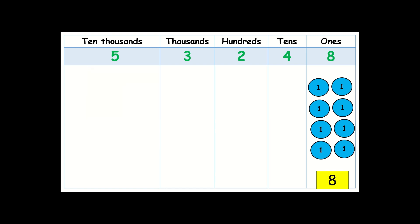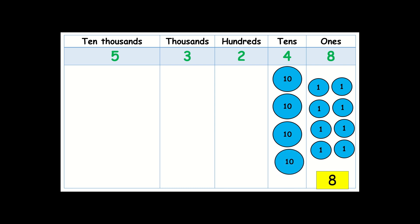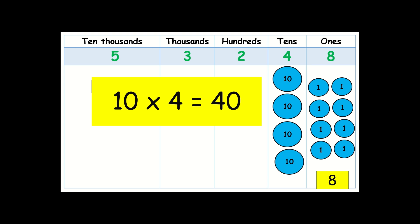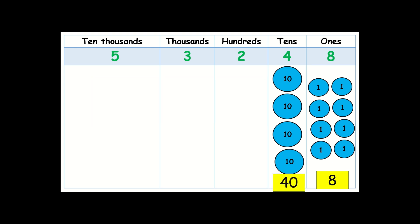Next, tens — how many tens? We have 4 tens. To find the value, we multiply the digit by its place value: 10 times 4 equals 40. So the value of digit 4 is 40. What about the value of digit 2 in the hundreds place? We have 2 hundreds. Multiply: 100 times 2 equals 200. So the value of digit 2 in the hundreds place is 200.